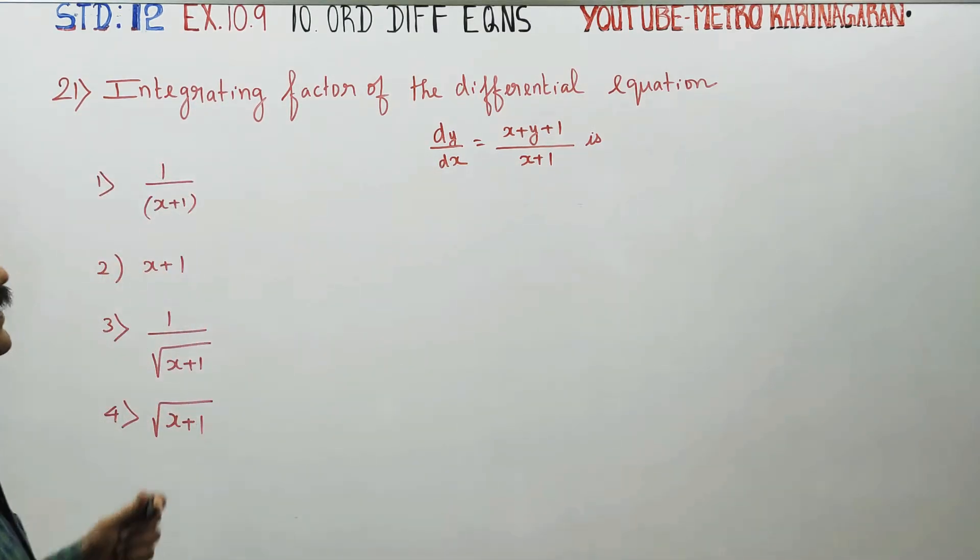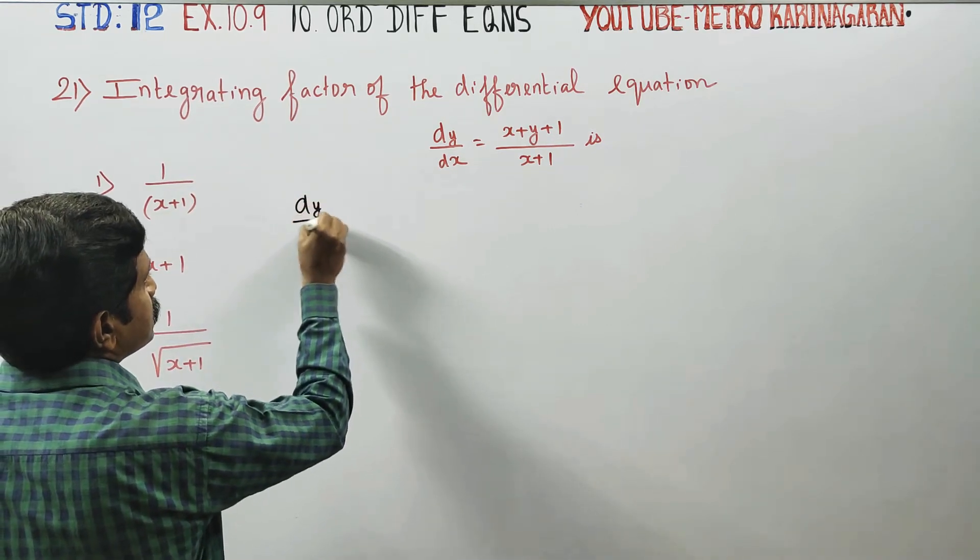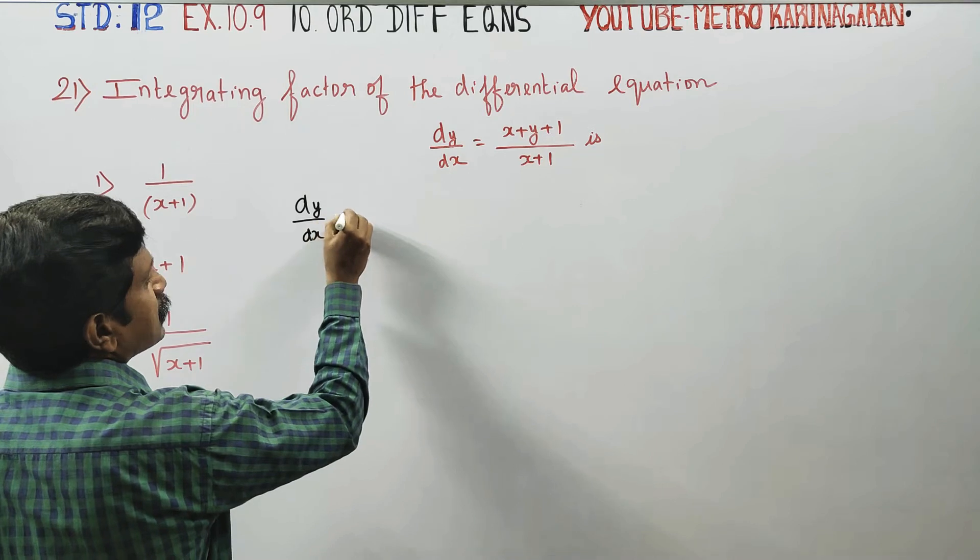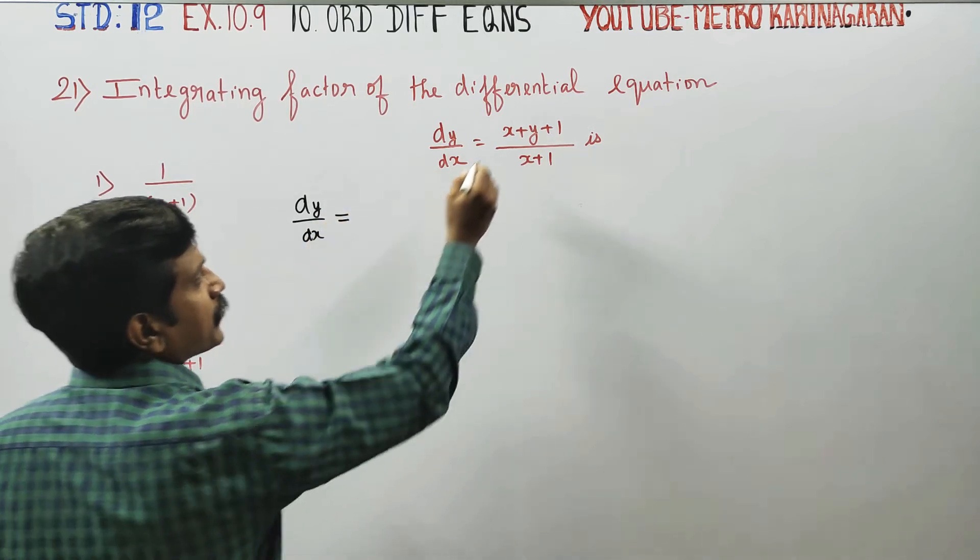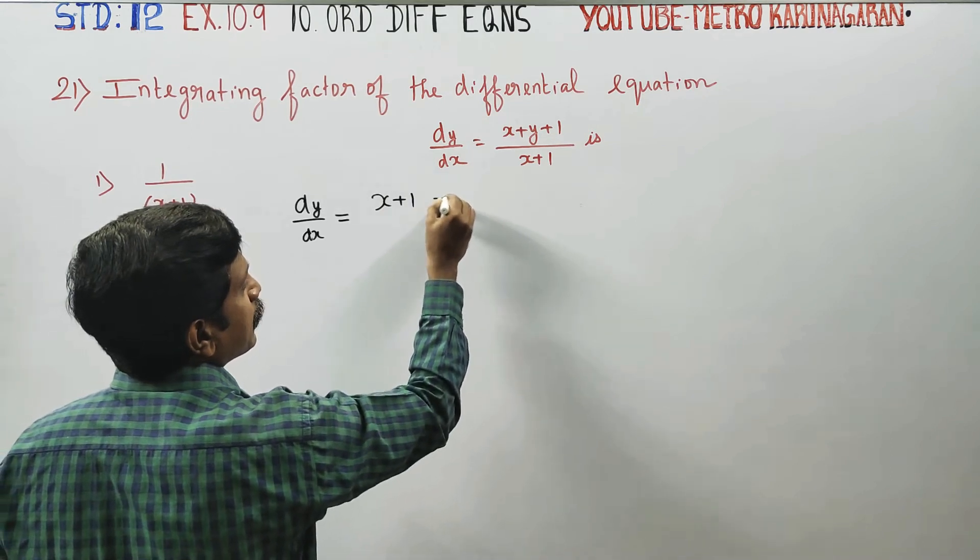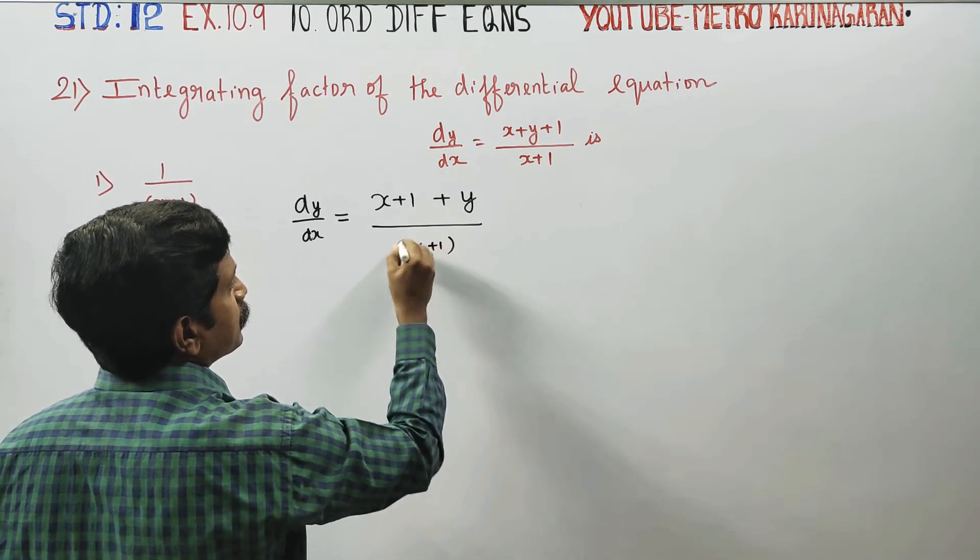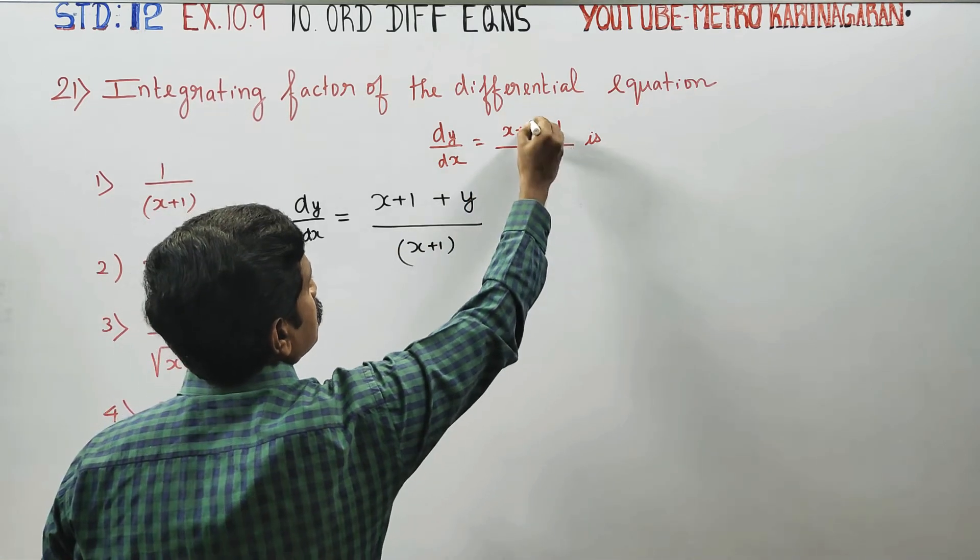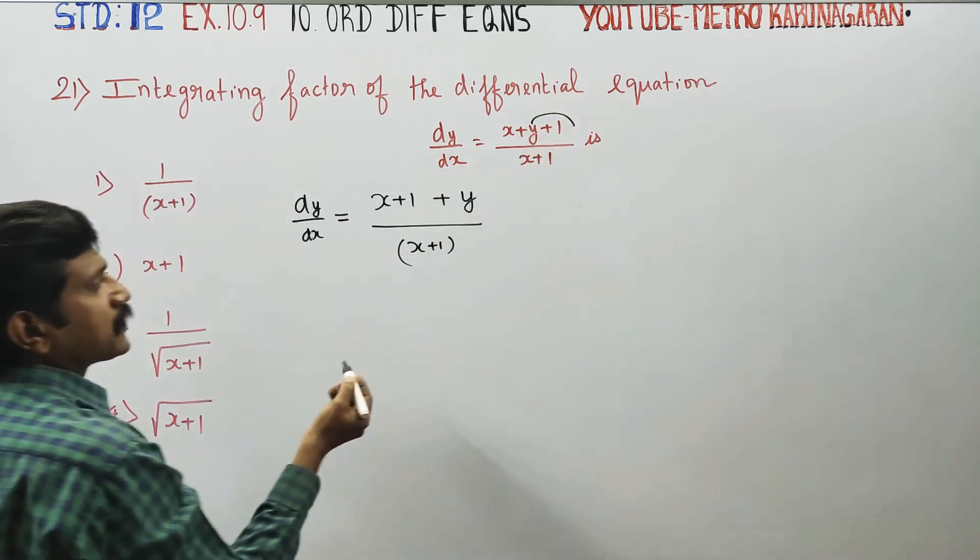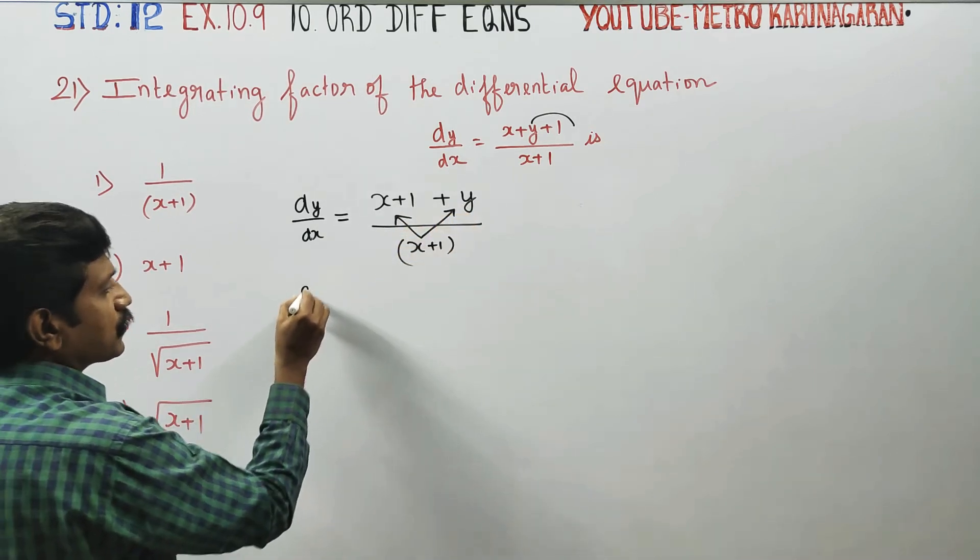You have to find the integrating factor of this differential equation. dy by dx is equal to, in the sum, x plus 1 plus y by x plus 1. When you separate the terms, plus 1 is separate, denominator is separate.